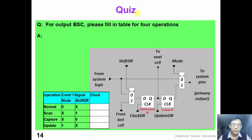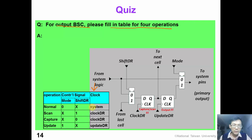Now it's time to work on the quiz. Given the output boundary scan cell, please fill in the table for the clock column to accomplish the full operation. The answer is actually the same as the input boundary scan cell. In normal operation we clock the system clock in system logic. For scan and capture operations we pulse clock_DR, and for the update operation we clock update_DR.